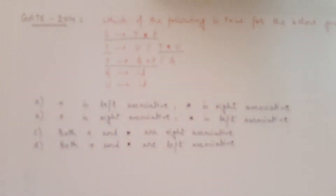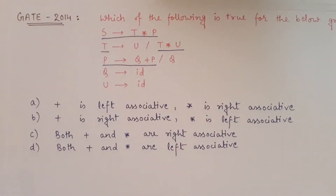Then T gives T star U — star is there. P gives Q plus P — plus is there. So out of all the productions given, these are the only three relevant ones: S gives T star P, T gives T star U, and P gives Q plus P, where plus or star is being used. The other productions are of no use for this question.